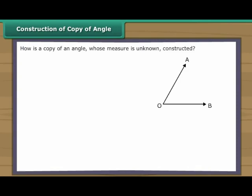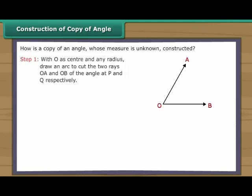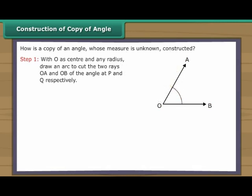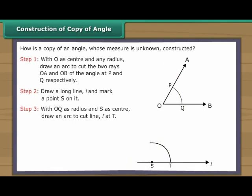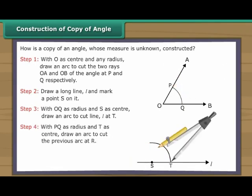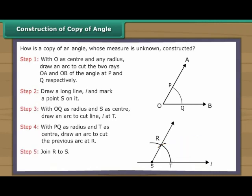Construction of copy of angle. How do we construct a copy of an angle whose measure is unknown? Angle AOB is given. With O as centre and any radius, draw an arc to cut the two rays OA and OB of the angle at P and Q respectively. Draw a long line L and mark a point S on it. With OQ as radius and S as centre, draw an arc to cut line L at T. With PQ as radius and T as centre, draw an arc to cut the previous arc at R. Join R to S. Angle RST is equal to angle AOB.